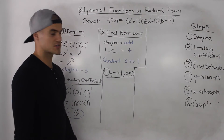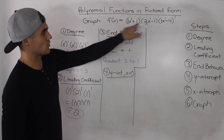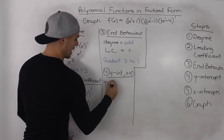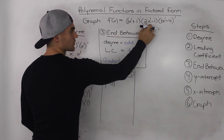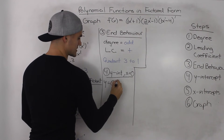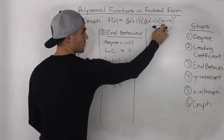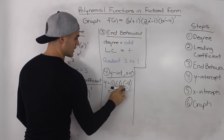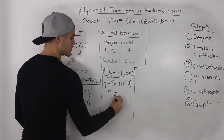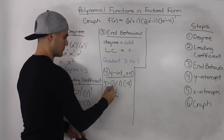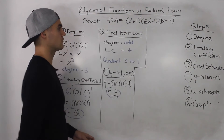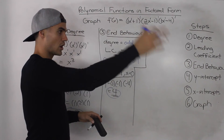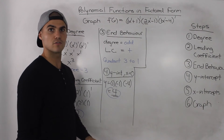Step 4: we have to find the y-intercept. Just plug in x equals 0. We'd get 0 plus 1 in the first bracket, which is 1. Two times 0 minus 1 is negative 1. And 0 minus 4 is negative 4. Multiplying: 1 times negative 1 times negative 4 equals positive 4. So the y-intercept is positive 4. If we were to expand this polynomial, the constant term would be positive 4.